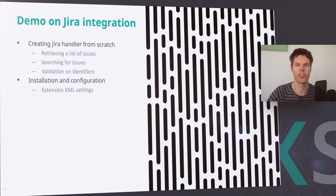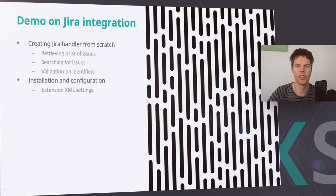Now I'm going to show you how to do a Jira integration. I will show you how to retrieve a list of issues, search on those issues, and also do the validation on those identifiers. I will also show you how to install and configure the extension. Let's write the Jira integration.